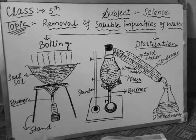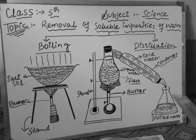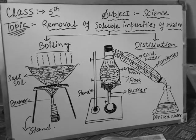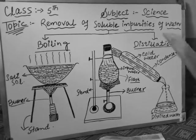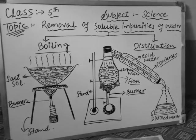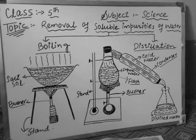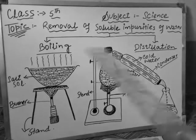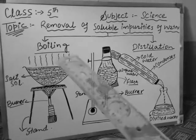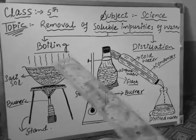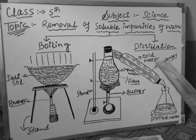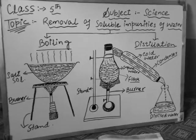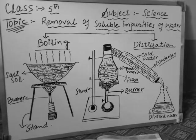Because salts are completely dissolved in water — they are completely soluble — so how do we remove soluble impurities from water? Today's topic covers two processes: boiling and distillation. They are very simple processes; boiling is something we usually do at home.